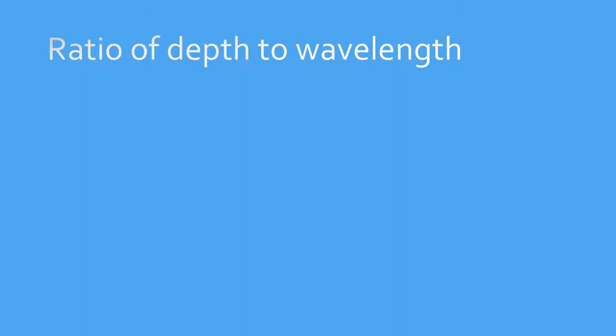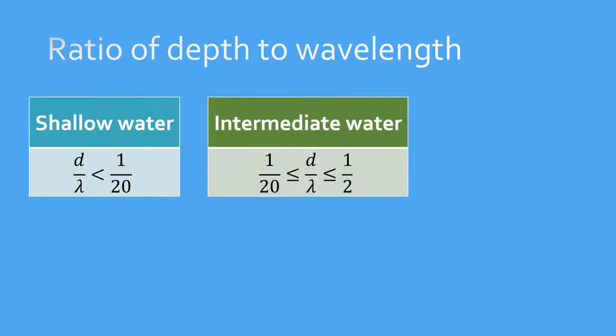Based on the wavelength and the depth over which waves propagate, they may be considered as shallow water, intermediate water, and deep water waves. The conditions are such that the ratio of depth to wavelength is less than 1/20th for shallow water, between 1/20th to a half for intermediate water, and larger than half for deep water.